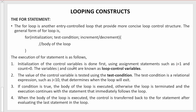Now let us start our discussion on the for statement. The for loop is another entry control loop that provides a more concise loop control structure. It is called an entry control loop because the condition gets evaluated first, and then the body of the loop gets executed. Here I have written down the syntax of the for loop.